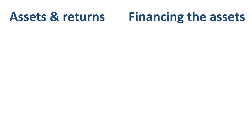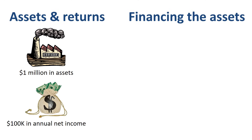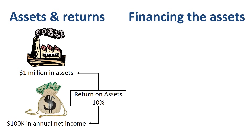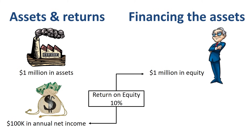In this example, we look at a factory with $1 million in assets. These assets generate an annual net income of $100,000. The return on assets is therefore 10%. Let's assume the assets are financed fully by equity — $100K net income divided by $1 million in equity is 10% return on equity. So far so good.